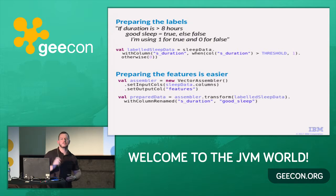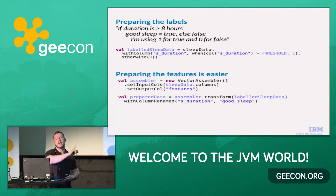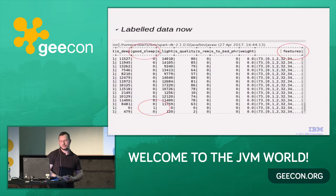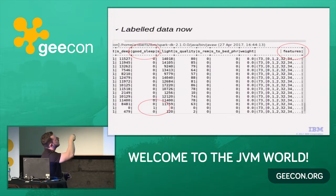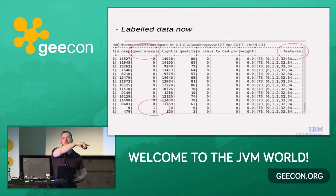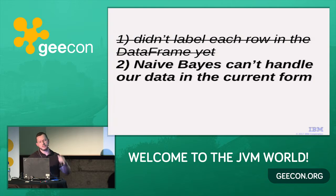The features part is easier. You want labels and features for machine learning. There's a built-in class called the VectorAssembler — just run it on all the columns: sleepData.columns. The label of the data is now 'good sleep' — zero or one. The features are the result of that previous step. Labels and features — great, we can move on.